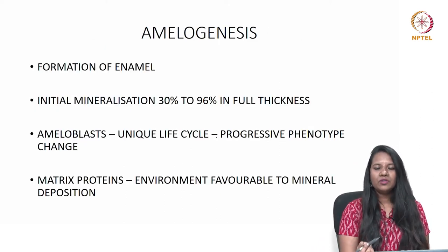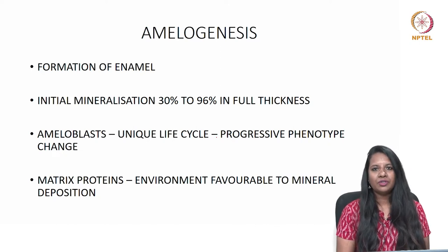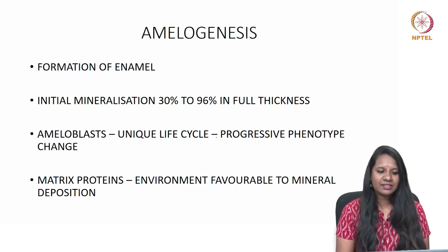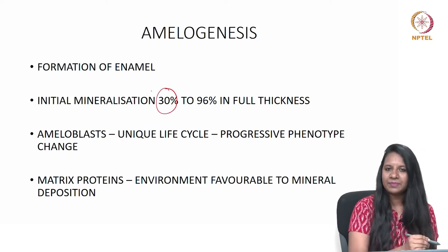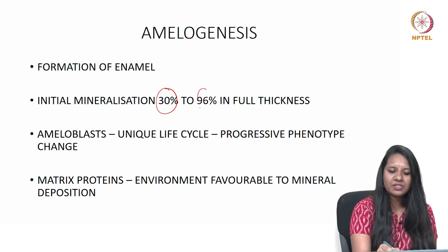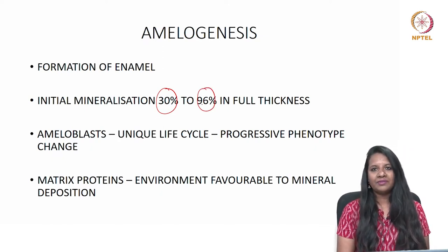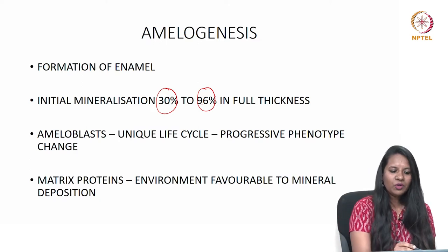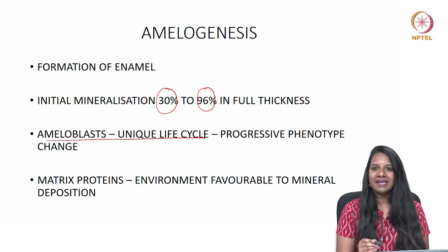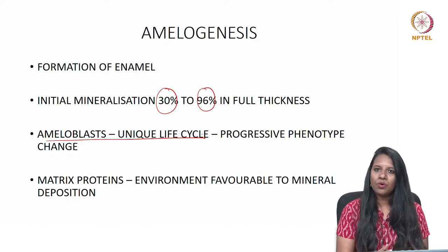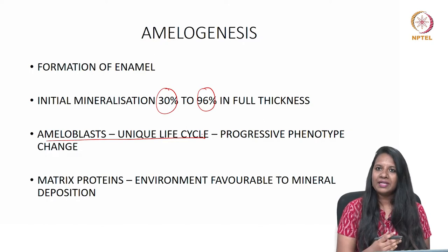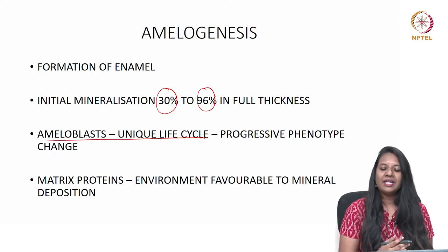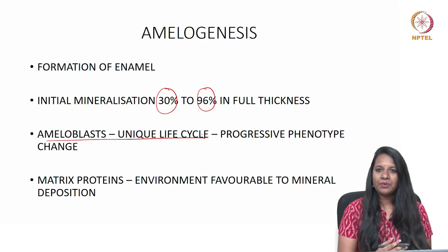Moving to amelogenesis, which is the formation of enamel. It occurs in two processes: first, initial mineralization where it is mineralized only up to 30%, then it is mineralized to 96% by the concurrent accretion of minerals. Ameloblasts have a unique life cycle characterized by progressive phenotypic change — each phase has its own primary activity, and they secrete matrix proteins that provide an environment favorable to mineral deposition.